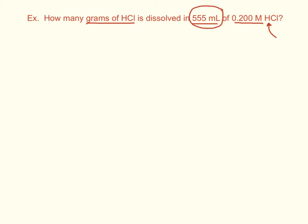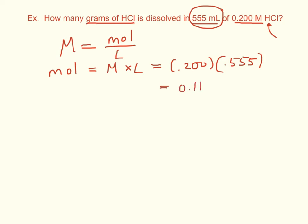So since molarity is moles over liters, we can rearrange that so that moles equals molarity times liters. And we're going to do this a lot this year. So our molarity is 0.2 molar. And again, we've got to multiply by liters, not milliliters, so 0.555 liters. And then if we do that out, we get 0.111 moles.